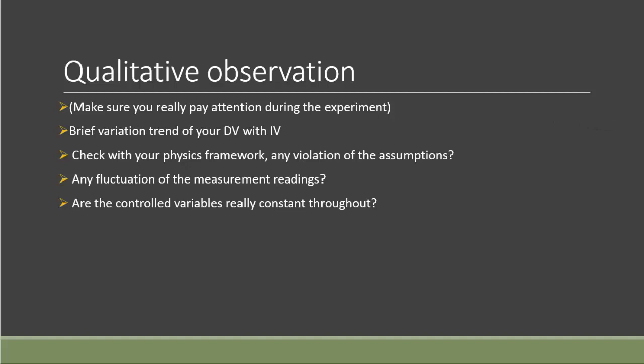The most basic qualitative observation you can always put down is a brief variation trend of your dependent variable with the independent variable. So you may find when the independent variable increases, the dependent variable decreases or increases. But this is just a qualitative way to say it—there's no mathematical model you could outline at this point.